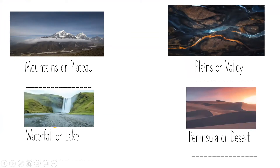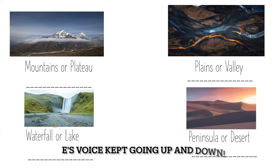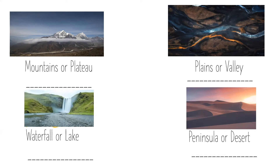Now for classwork — it's only four questions. You have to identify which landform or water form is shown in each picture. E will do the first two and I'll do the last two. We showed you quite a few picture examples, so hopefully this will be an easy worksheet.